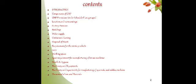Good afternoon, dear friends. In today's lecture we are going to study what is GMP for the Ayurvedic system or Indian system of medicine. It contains an introduction of GMP, then components of GMP, GMP provisions under Schedule T, location and surroundings of manufacturing environment, factory premises, buildings, water supply, containers used for cleaning, disposal of waste, requirement for sterile products, store, working space, space requirements for manufacturing of the Unani system, health and hygiene, machinery and equipment, documents and records.